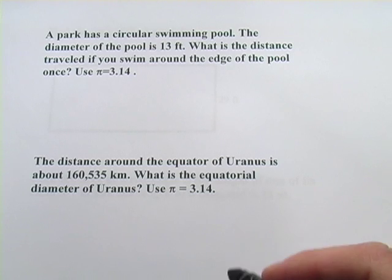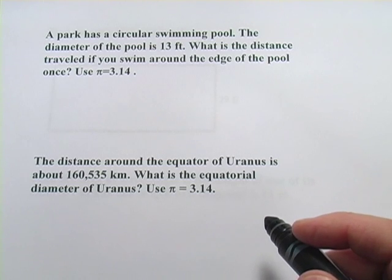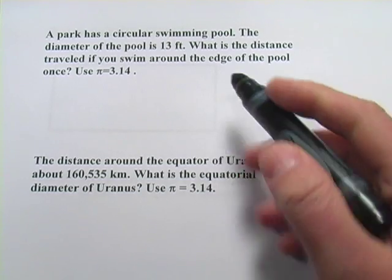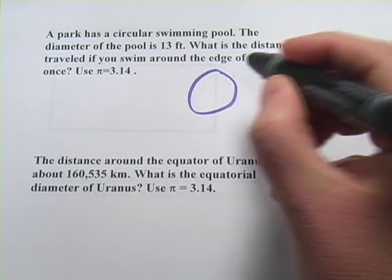Here we have some word problems having to do with circumference and arc length. Let's look at the first one. It says a park has a circular swimming pool. Here's our circular swimming pool.